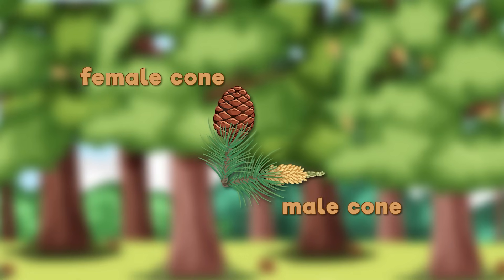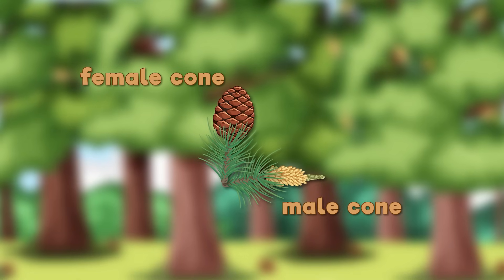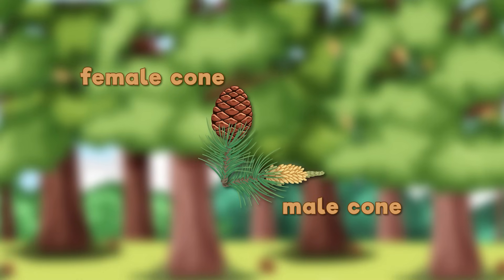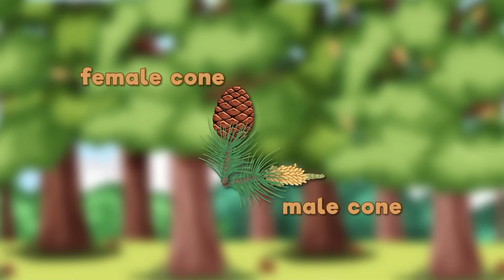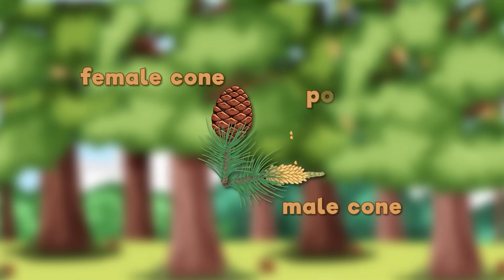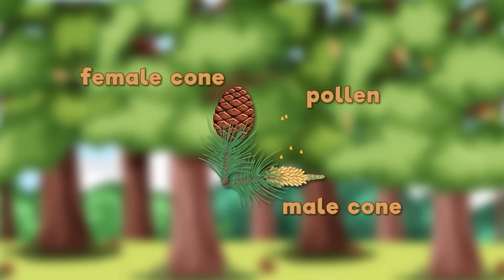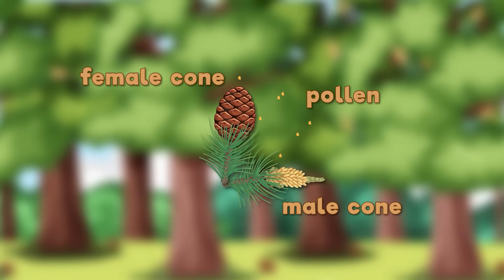Male cones are much smaller and positioned lower on the tree. Their job? To produce pollen. When conditions are right, male cones release tiny grains of pollen, which are carried by the wind.